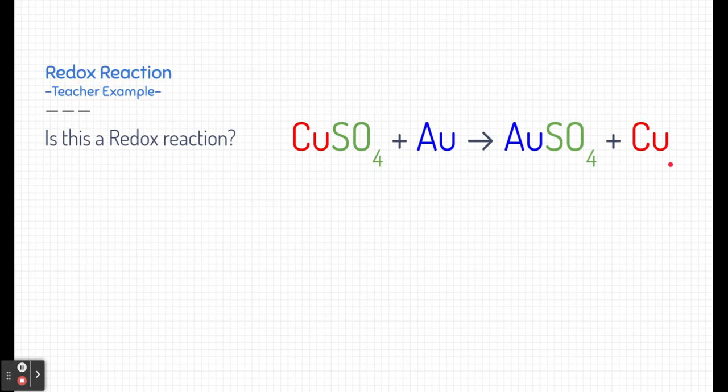Here's another example of a redox reaction. This time, we're just going to take a look at the reaction itself. Now, the question is, is this a redox reaction? Well, let's take a look. When we start off, we can see that copper two sulfate has a positive two charged copper and a negative two charged sulfate. Here we have a gold element, and it doesn't have a charge because it's just an element. It's not bonded to anything.